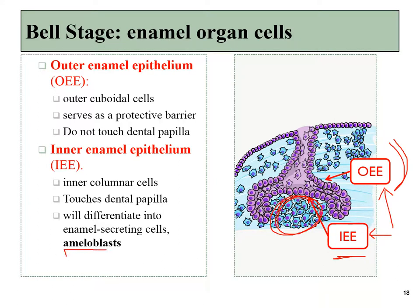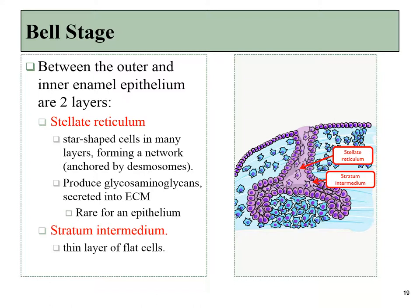The inner enamel epithelial cells that contact the dental papilla will be induced to form ameloblasts. In between the outer and inner epithelium is the stellate reticulum — named for its star shape — which produces extracellular matrix, unusual for an epithelium. These cells resemble connective tissue but are definitively epithelial by lineage. There is also a layer called the stratum intermedium. In histology, the middle area with loosely packed cells may look like connective tissue, but the innermost layer shows traditional columnar epithelium connected to neighboring cells.